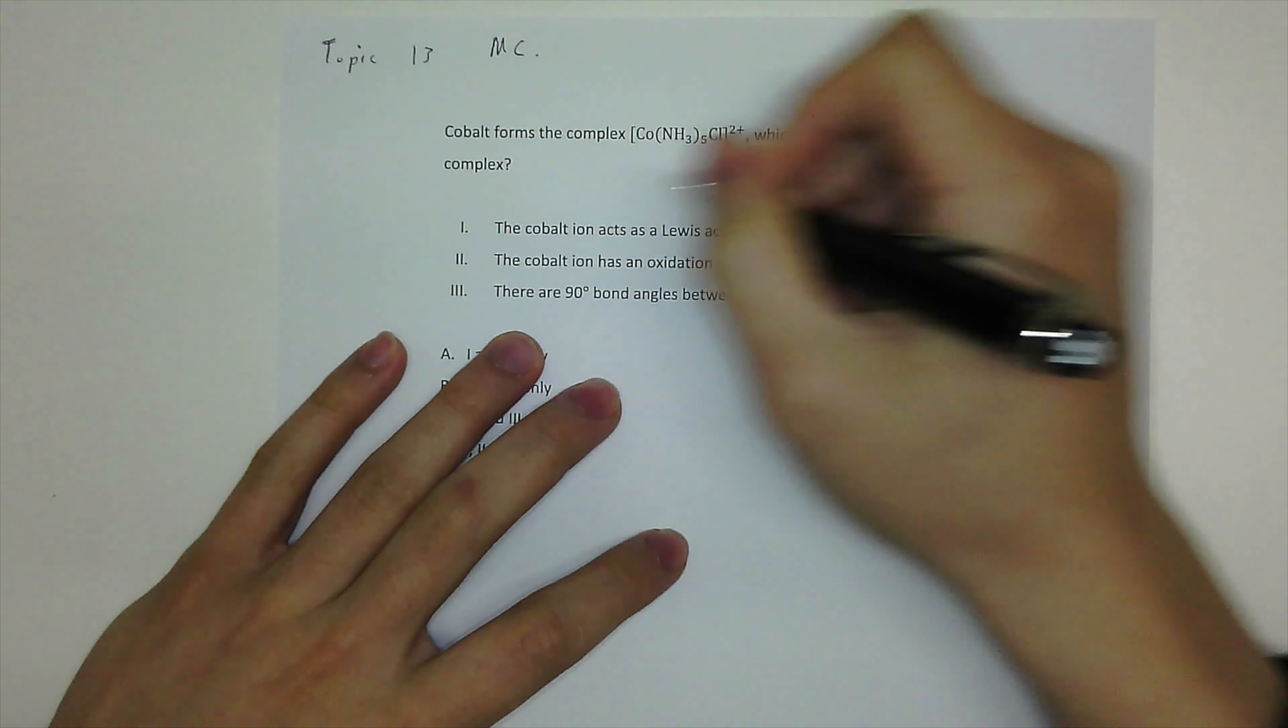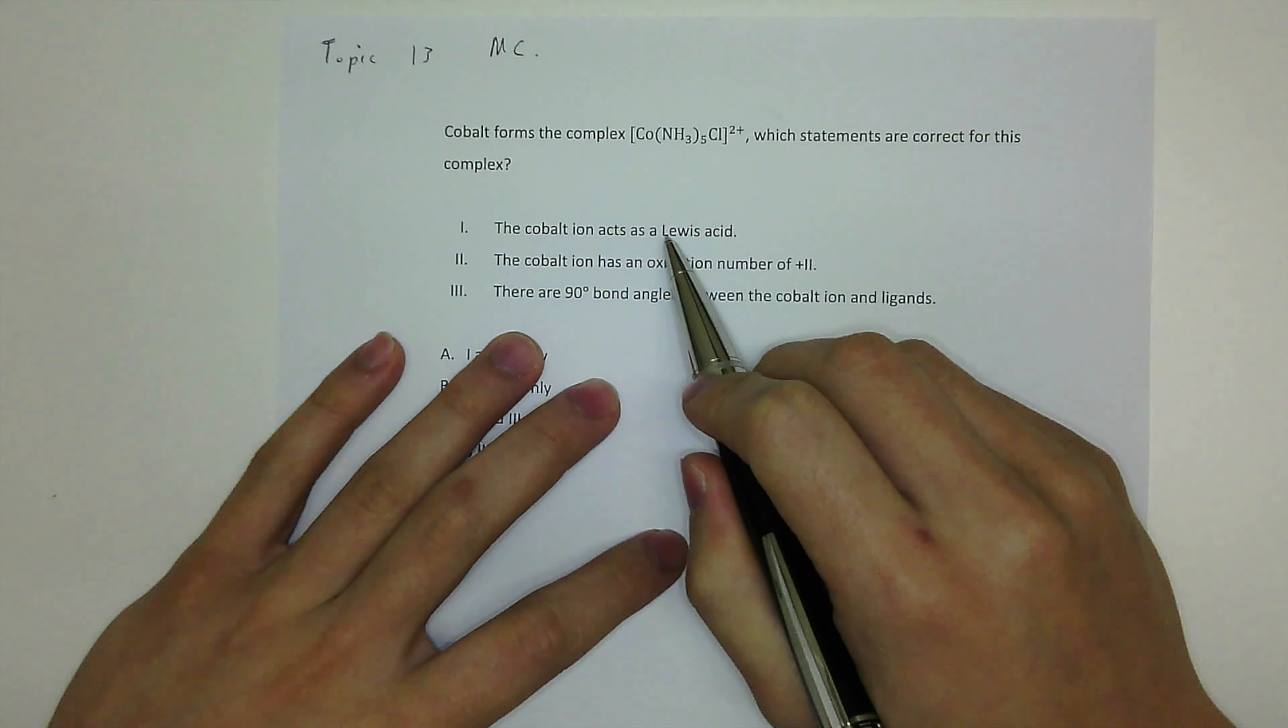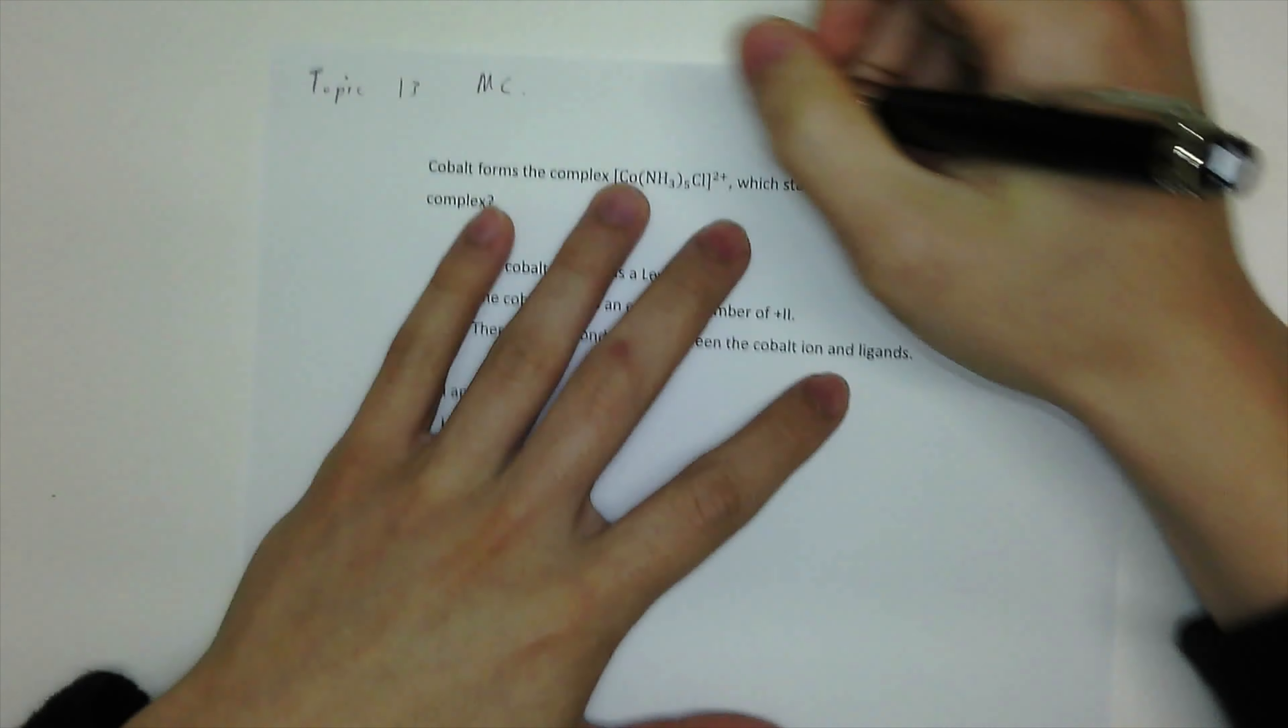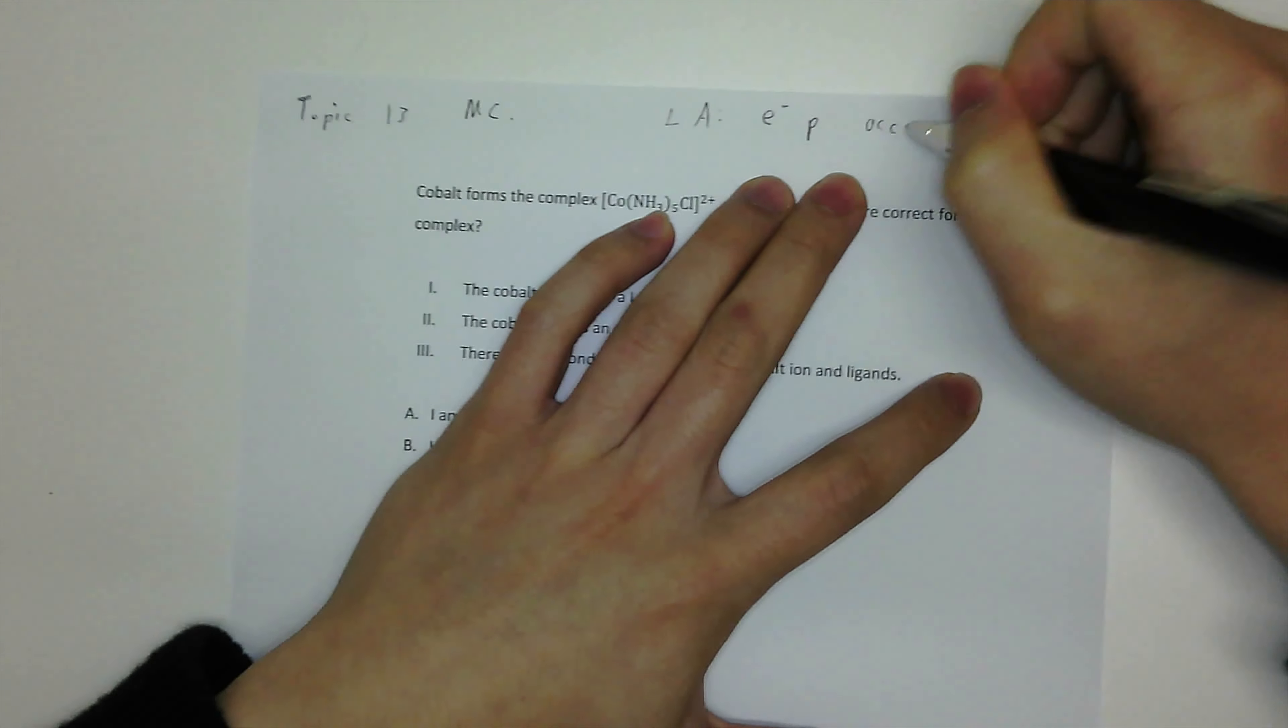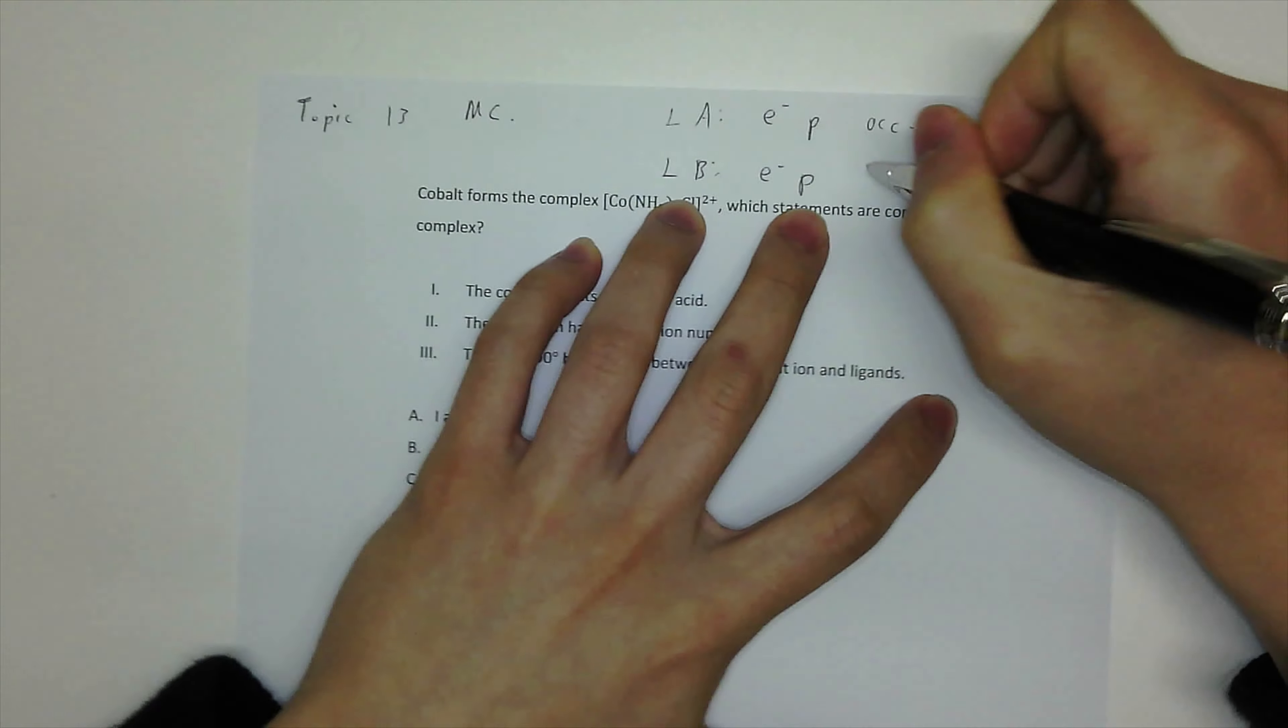Which statements are correct for this complex. The first one, the cobalt acts as a Lewis acid. So first of all, Lewis acid-base definition. Lewis acid is an electron pair acceptor.